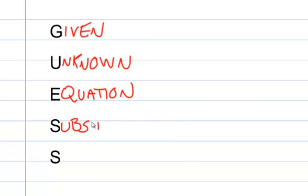We'll next substitute the given information into that equation. So we're going to substitute this given information into the equation to calculate what our unknown is. And then in the end, once we've substituted, we're going to solve.